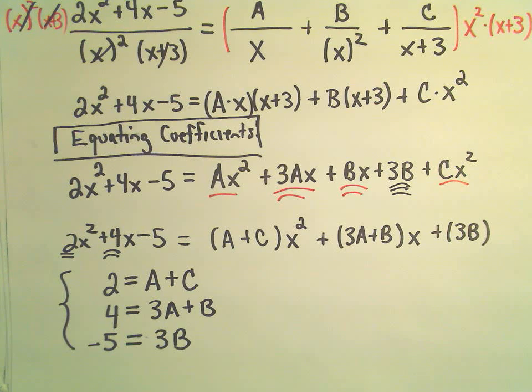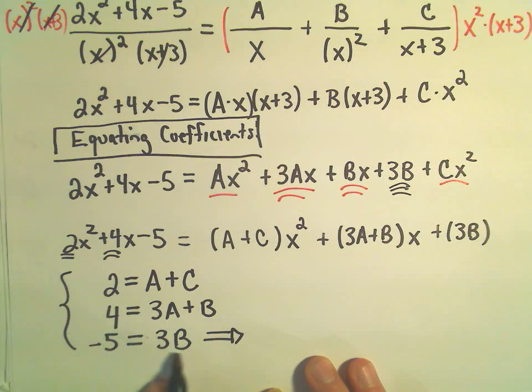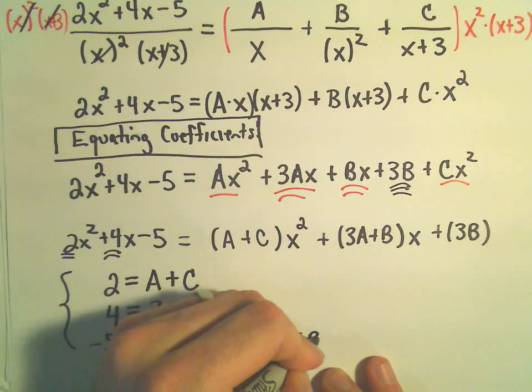Instead of x and y, well, we've got A's and B's and C's. Okay? So instead of x, y, z, A, B, C. Well, you know, sometimes this can be the tedious part. But this one I think is not too bad. Notice we can divide both sides by 3. And we get negative 5 thirds as our value for B.